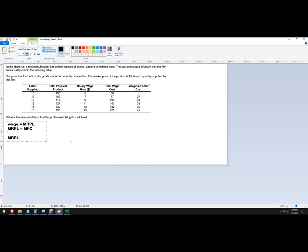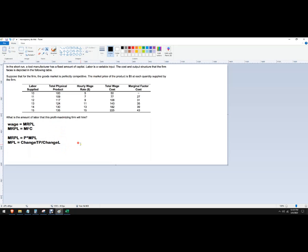Now, marginal revenue product of labor is the price of the product times the marginal product of labor. So it's really like the productivity of each worker times the value of the product they're selling. The marginal product of labor is the change in total product divided by the change in labor. We're going to use capital L usually for labor.